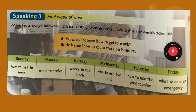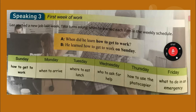Let's do this again — listen and repeat. When did he learn how to get to work? He learned how to get to work on Sunday. When did he learn when to arrive? He learned when to arrive on Monday. When did he learn where to eat lunch? He learned where to eat lunch on Tuesday. When did he learn who to ask for help? Remember, there's always one person willing to help — make friends with that person. He learned who to ask for help on Wednesday. When did he learn how to use a photocopier? He learned how to use a photocopier on Thursday. When did he learn what to do in case of emergency? He learned what to do in case of emergency on Friday. Okay, Leo had a busy week.